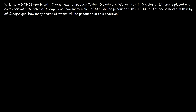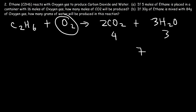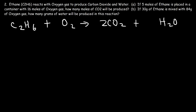Number 2: ethane reacts with oxygen gas to produce carbon dioxide and water. Let's start with a balanced chemical equation. Here's ethane — C2H6 — reacting with O2 to produce CO2 and H2O. We have two carbons in ethane, so we put a 2 in front of CO2. There are six hydrogens, so we put a 3 in front of H2O. That gives four oxygens from CO2 and three from water — a total of seven — so we need 7/2 in front of O2. Multiplying everything by 2 to clear the fraction: the equation becomes 2 C2H6 + 7 O2 → 4 CO2 + 6 H2O. Now everything is balanced.